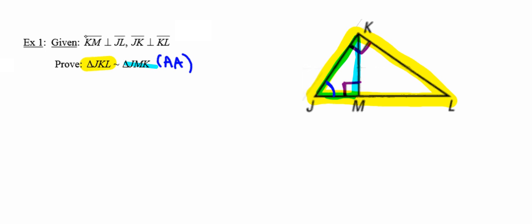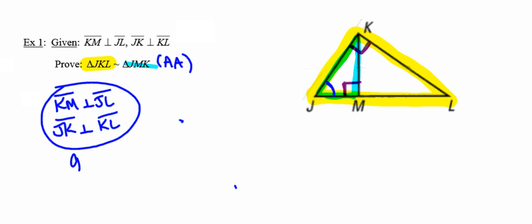I knew those guys were right angles because of the perpendicular lines. So I'm going to start out by discussing the perpendicular lines. Segment KM is perpendicular to segment JL. Segment JK is perpendicular to segment KL. And I know those are true statements because they were given to us.